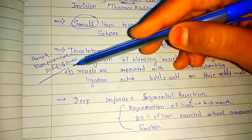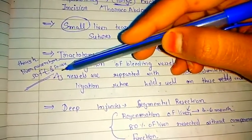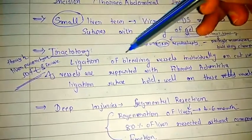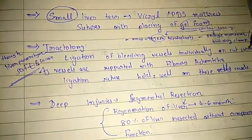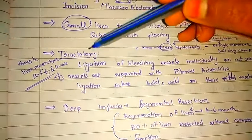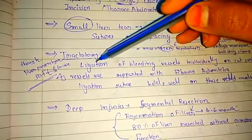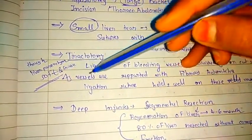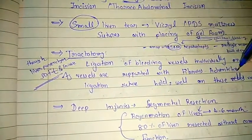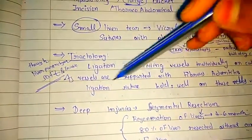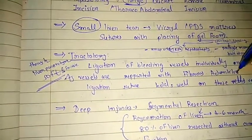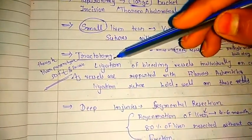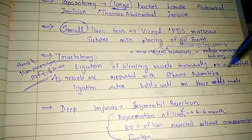Although the liver parenchyma is soft and friable, making it very difficult to suture, tractotomy refers to the ligation of bleeding vessels individually on the cut surface. This works because vessels are supported with fibrous adventitia — even though parenchyma is soft, the fibrous adventitia allows secure ligation.